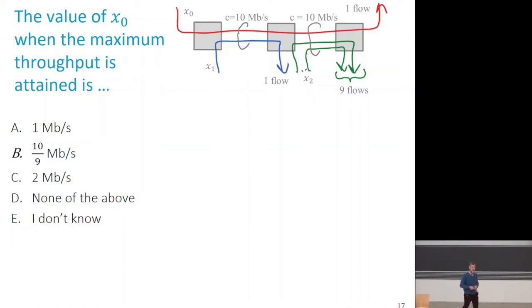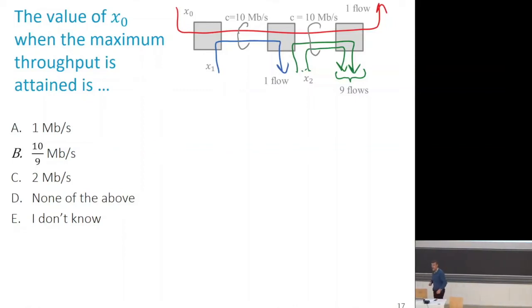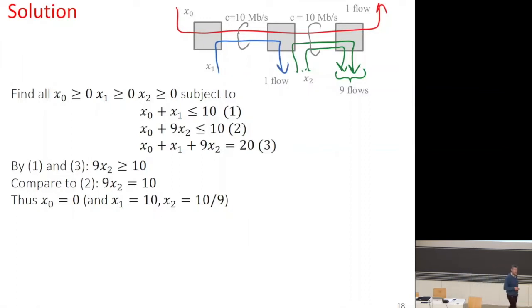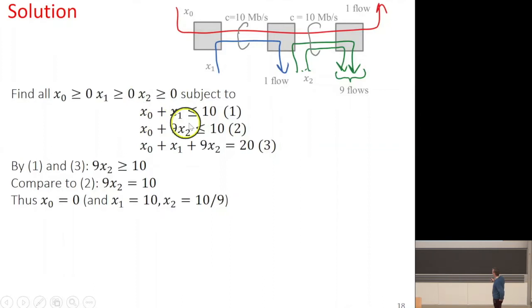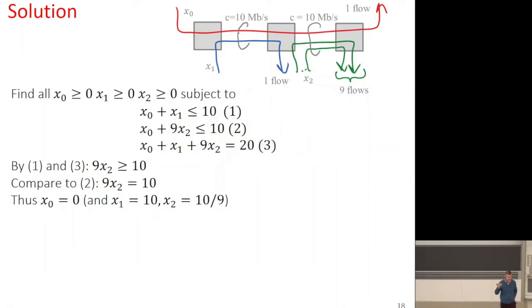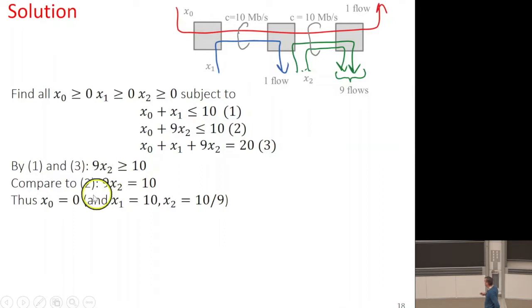Now, when we reach the maximum, what is the value of x0? The only way to reach the maximum throughput is to force x0 to 0. We can verify this mathematically by analyzing the constraints. If we assume an allocation that achieves the maximum, we find values for x2 that force x0 to zero. The only way to reach 20 megabit per second of total capacity is to force the red flow to equal 0.